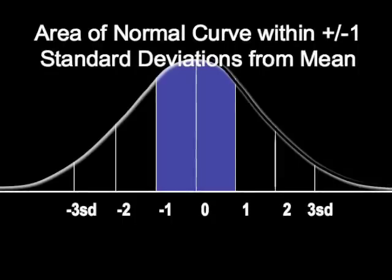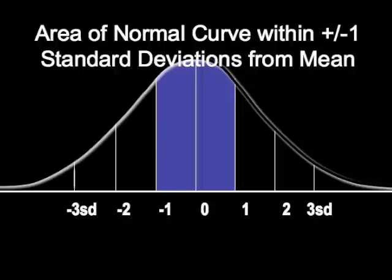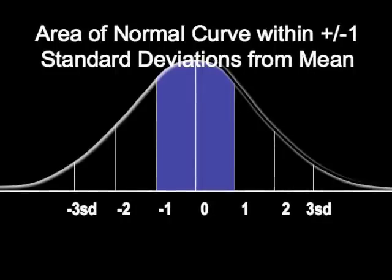Normal distribution is a very important distribution in statistics because if we know a variable is normally distributed, we always know what percent of the cases will fall between any two points in that distribution.